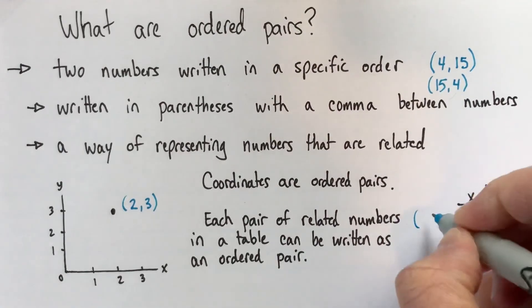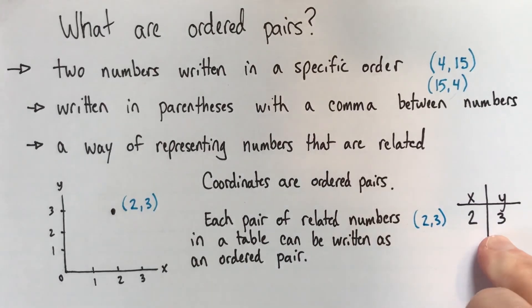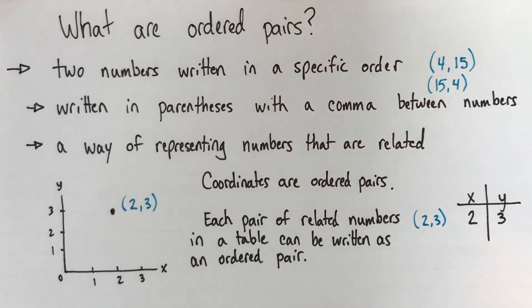So, here we could use the ordered pair 2, 3 to represent this line in the table. Alright, good luck.